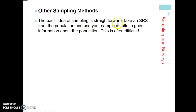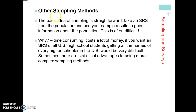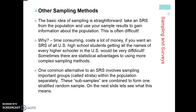The basic idea of sampling is straightforward — you take a simple random sample from the population and use the sample results to gain information about the population. This can often be hard because making sure your random sample is large enough to represent the population using the hat method is time consuming. If we want a simple random sample of all high school students, getting all the names of every high schooler in the United States is going to take a long time and be very costly. There are more complex sampling methods that give an advantage over simple random sampling because they're not as time consuming and won't cost as much money. One common alternative involves sampling important groups called strata.